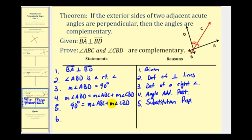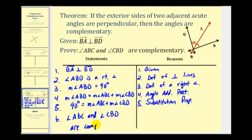For step six, we know the sum of these measures is 90 degrees, and therefore angle ABC and angle CBD are complementary. This is by definition of complementary angles.